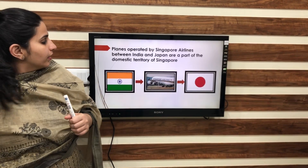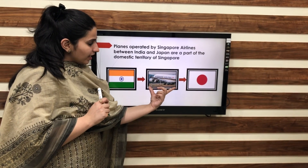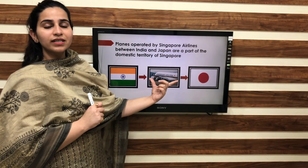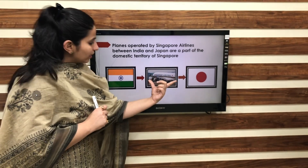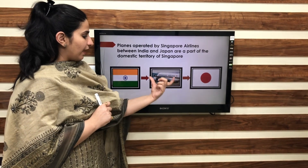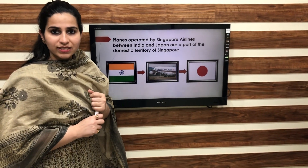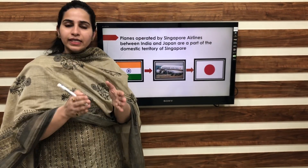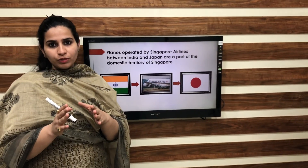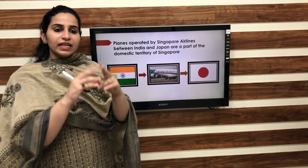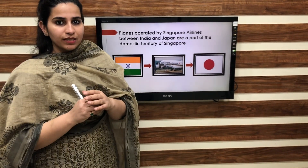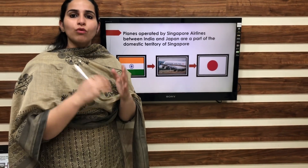Similarly, in this example, the aircraft is owned and operated by Singapore Airlines, which is considered a normal resident of Singapore. This airline is operated between India and Japan, so this will be considered as domestic territory of Singapore. In short, any aircraft or ship, if operated and owned by the normal resident of a country and operating between two other countries, will be considered as domestic territory of their own country.